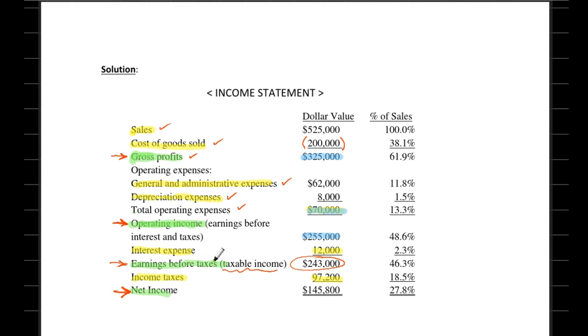Let me actually open a new page to list those items one more time. Let's try to remember together: we started with sales, then we deducted cost of goods sold from sales, and the difference between the two gives us gross profit.